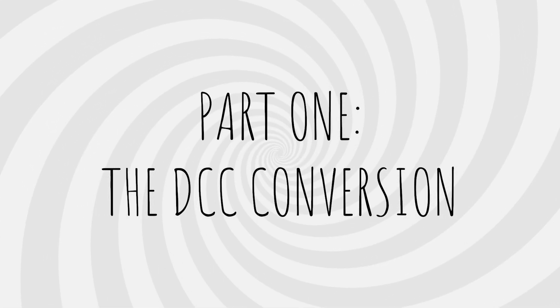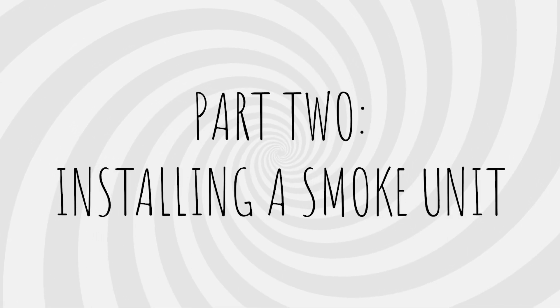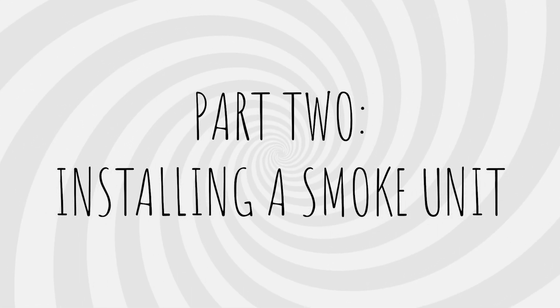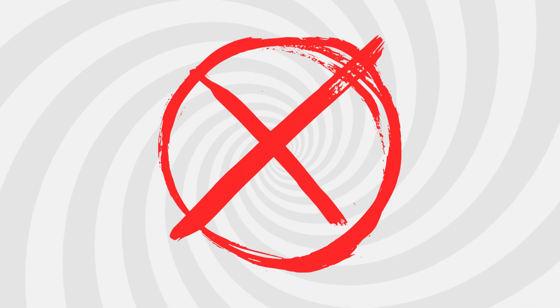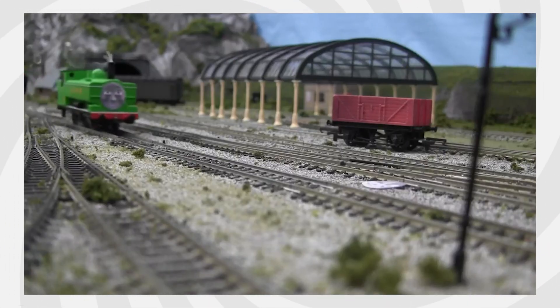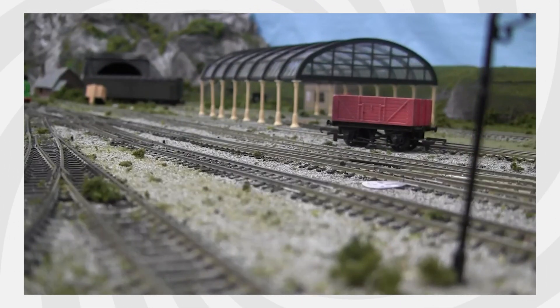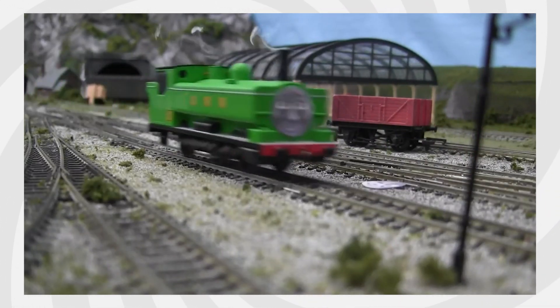I've broken down this tutorial into two parts. Part one will show you how to convert a regular Bachmann Thomas to DCC, and then I will walk you through the process of adding a smoke unit. I do not recommend installing a smoke unit without DCC. Locomotives that only run on DC do not generate enough power for the smoke unit unless running at full speed. And even then, it isn't a lot of smoke.